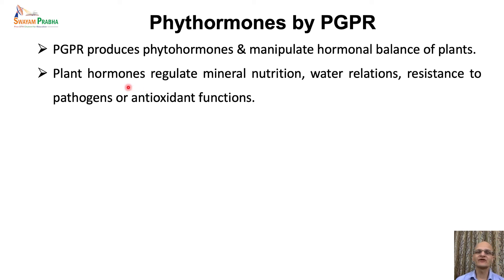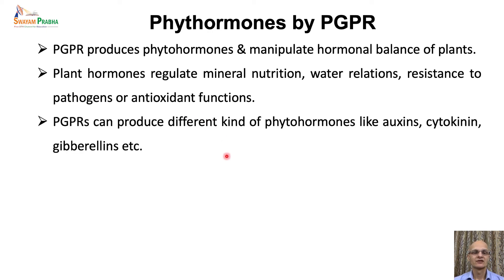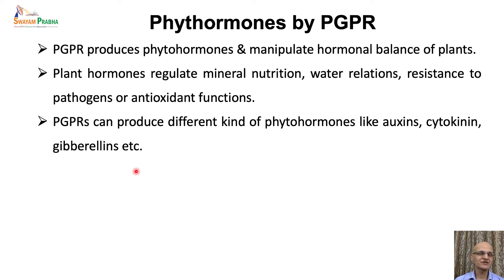Phytohormones play several important roles in plant growth and development — they affect mineral nutrition, water relations, resistance to pathogens, and antioxidant functions. PGPRs can synthesize different kinds of plant hormones like different types of auxins, cytokinins, gibberellins, abscisic acid, and so on. The concentration as well as the type of these hormones secreted by PGPR differs among different PGPR species and may have different types of impact on plant growth.